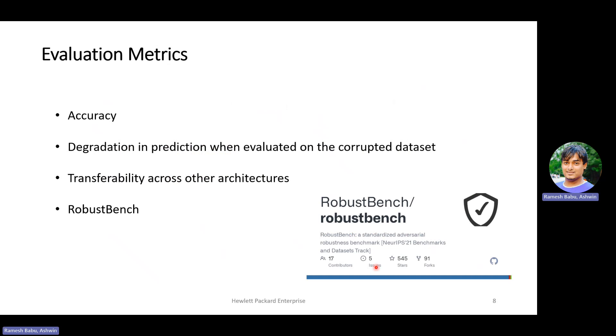To compare the efficiency of our proposed method, we use some of the well established metrics. One of them is Robustbench. Robustbench is a platform to evaluate how robust trained deep learning models are. We use Robustbench to compare some of the very popular adversarial retraining and training methods on the existing benchmarks and our benchmark. In addition to Robustbench, we also look at other metrics such as accuracy, degradation and prediction, transferability across other architectures and others.